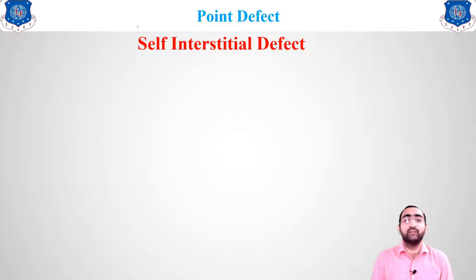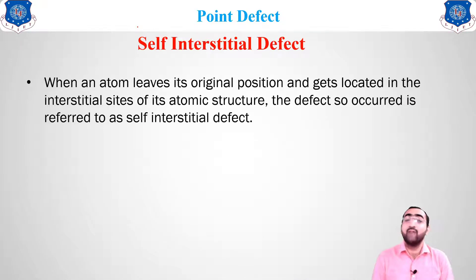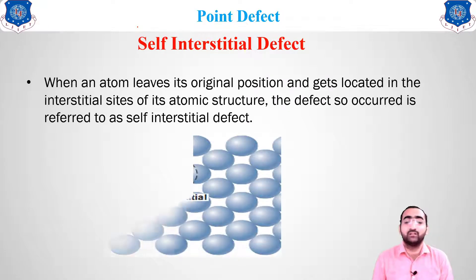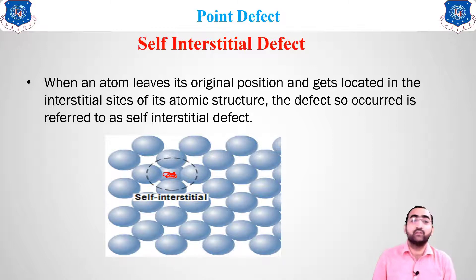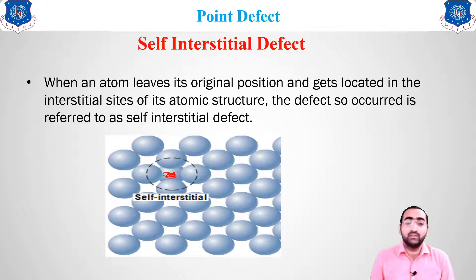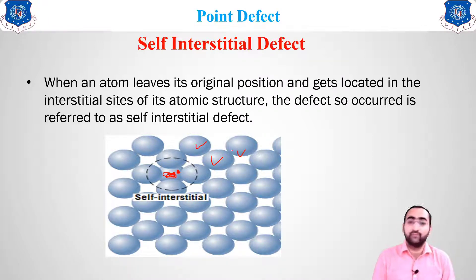The second type is the self-interstitial defect. When an atom leaves its original position and gets located in the interstices of the atomic structure, the defect that occurs is known as a self-interstitial defect. You can see the atom has settled in between the other atoms. Importantly, the atom sitting at this interstitial area is of the same size as all the surrounding atoms.